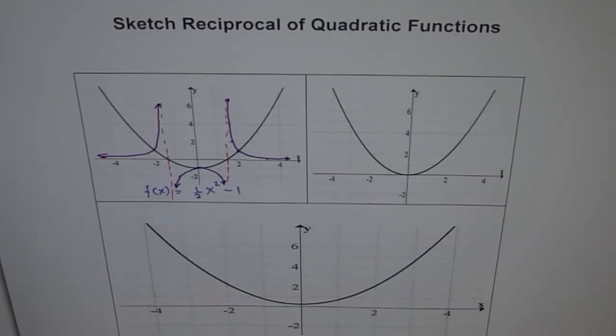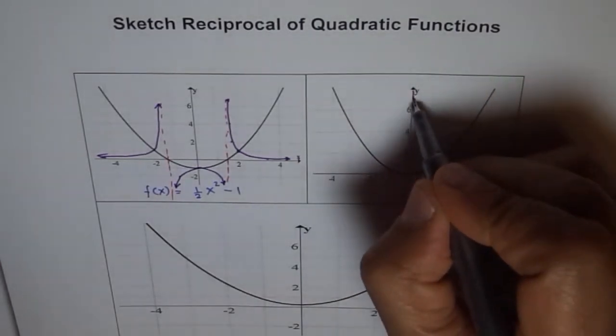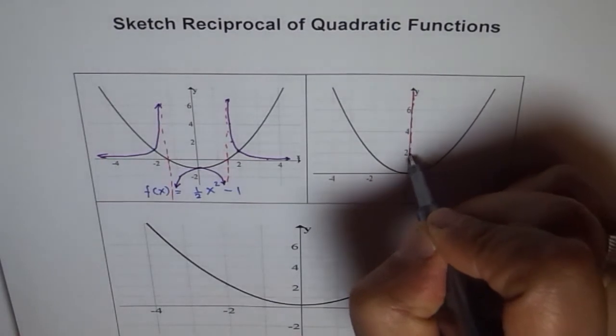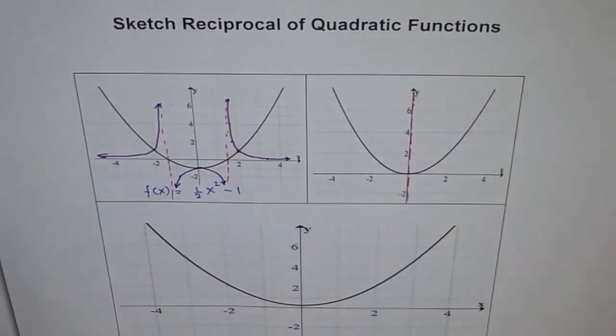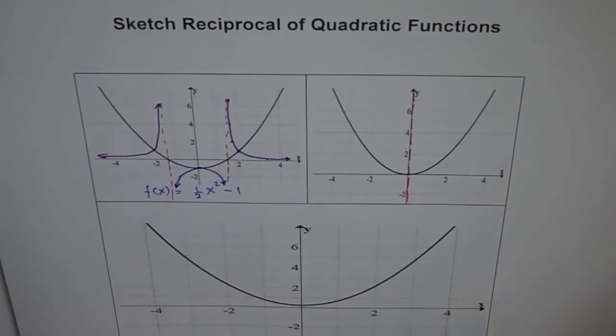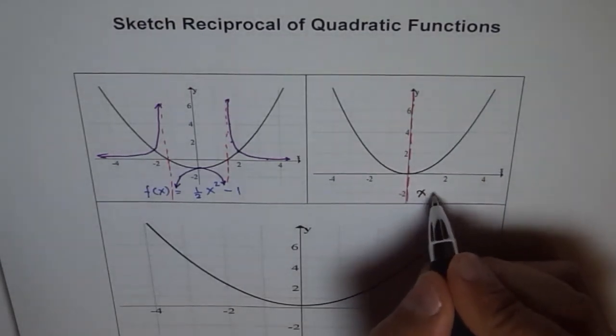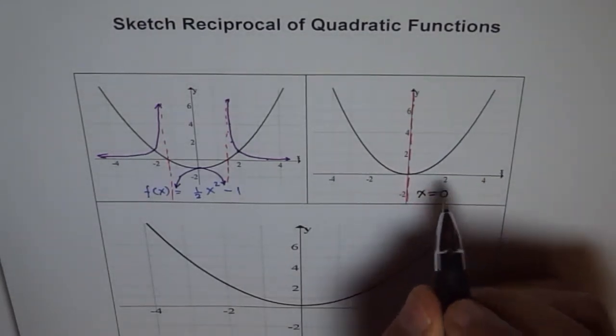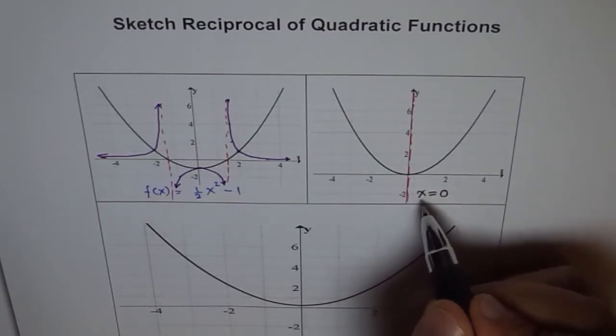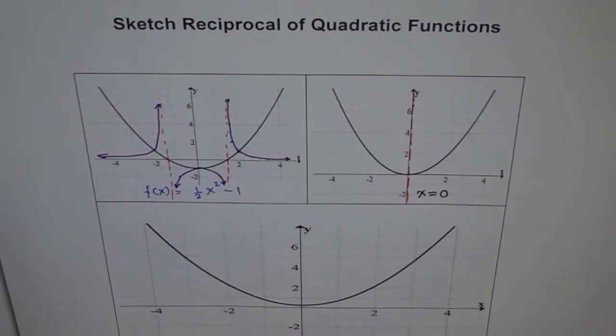Second one reciprocal is kind of tricky. How many x-intercepts does it have? Only one. So that means there is only one vertical asymptote. So the vertical asymptote happens to be y-axis. The equation for this is x equals to zero. Many times students make a mistake here also. They write y equals to zero. No, it is not. It is x equals to zero.